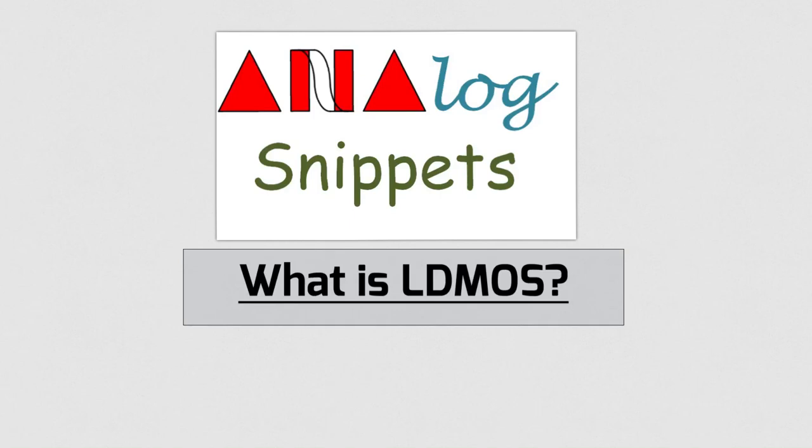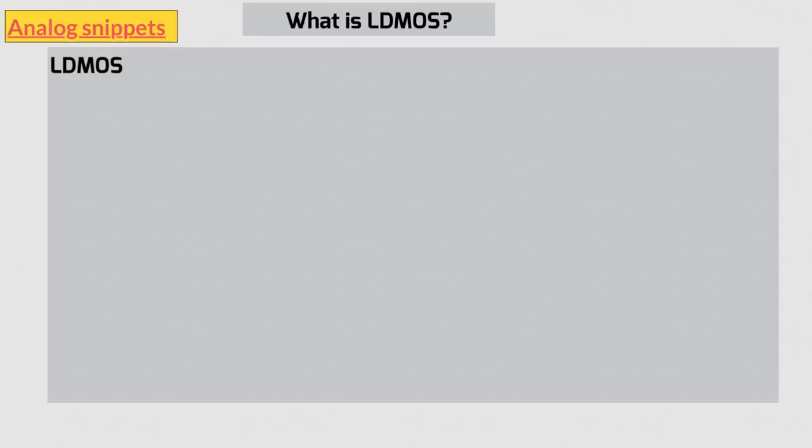Hello everyone, welcome back to analog snippets. If you have ever worked in high voltage circuits, you must have heard of LDMOS. LDMOS is a type of power device, and MOS is simply your familiar MOSFET, and LD stands for laterally diffused.